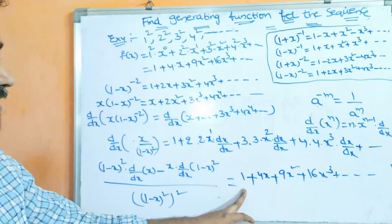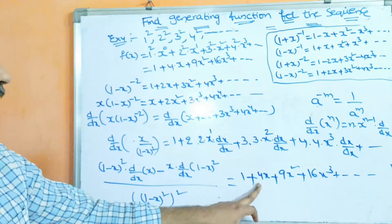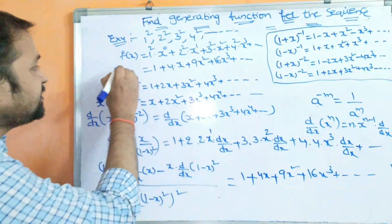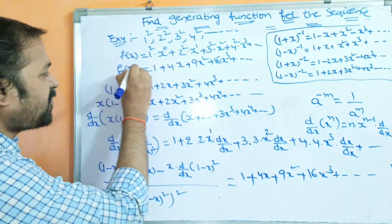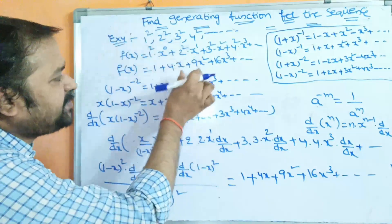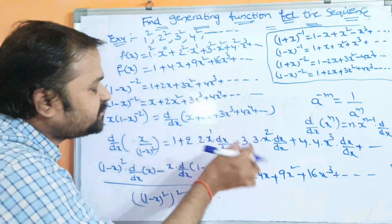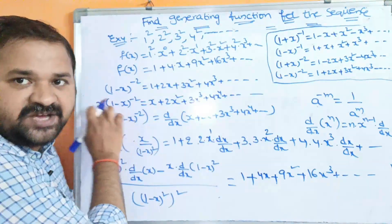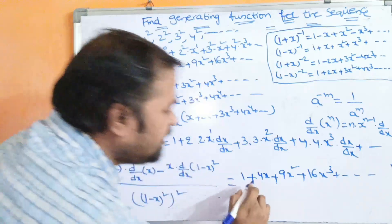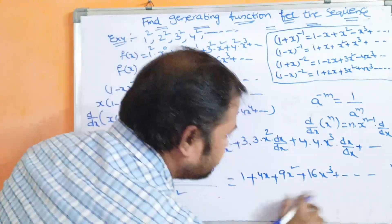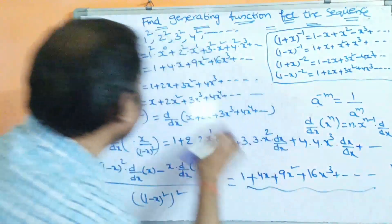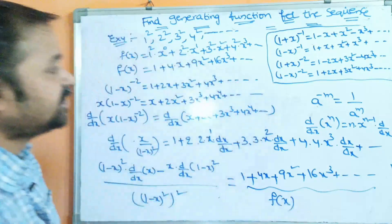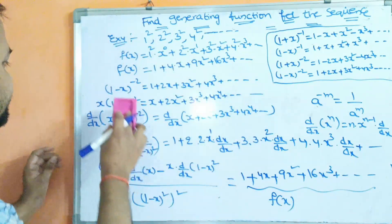So d/dx of x·(1-x)^(-2) equals (1+x)/(1-x)³, which gives 1 + 4x + 9x² + 16x³ and so on. This is exactly our sequence f(x), so the generating function for 1², 2², 3², 4²,... is (1+x)/(1-x)³.